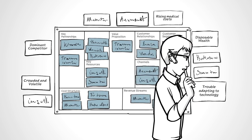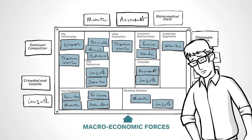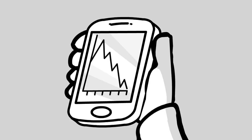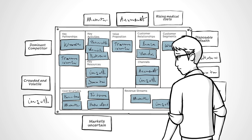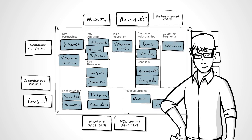Finally, below your canvas, map macroeconomic forces. How is the global economy doing? Markets may be in a state of rampant uncertainty. How available is capital? Venture capitalists may be taking few risks.